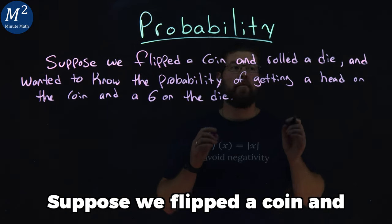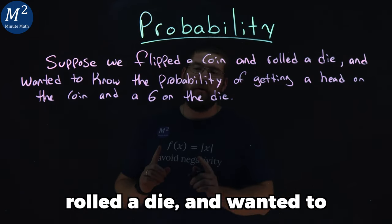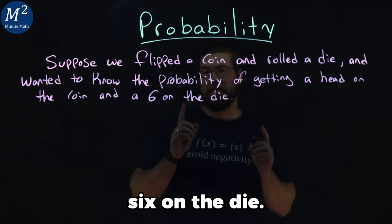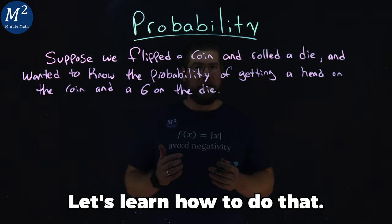Suppose we flipped a coin and rolled a die and wanted to know the probability of getting a head on the coin and a six on the die. Let's learn how to do that.